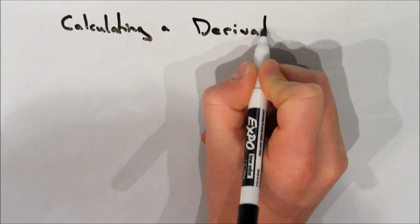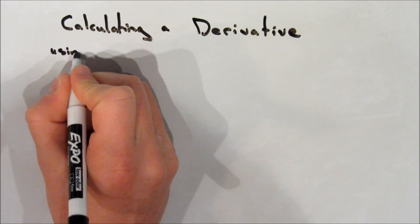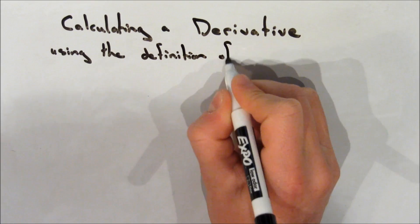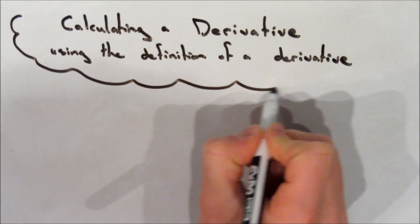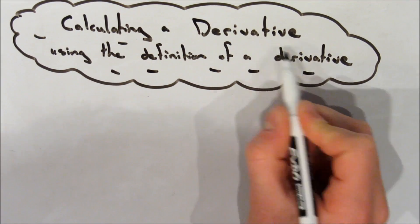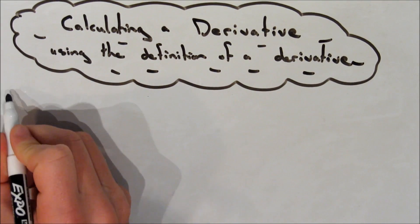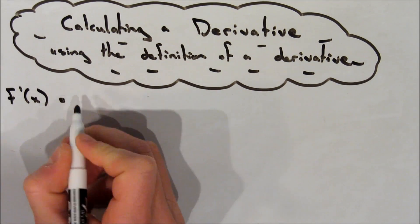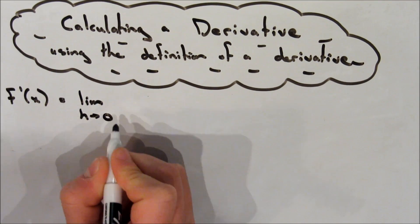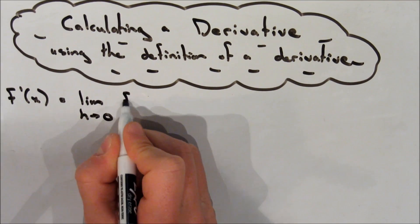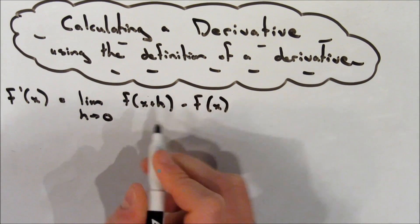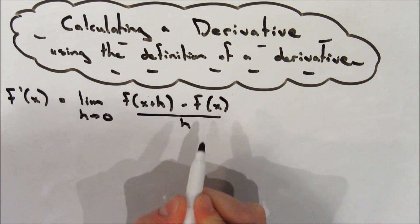In this video, I will explain how to calculate a derivative using the definition of a derivative. You may have seen my last example video, which I used this equation: f'(x) is equal to the limit as h approaches 0 of f(x plus h) minus f(x) over h.